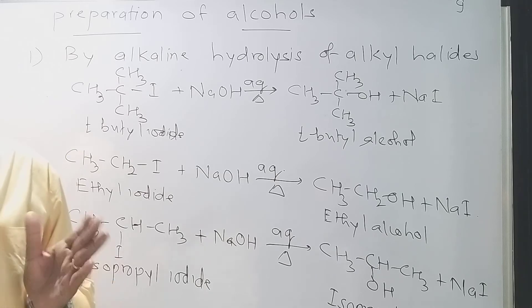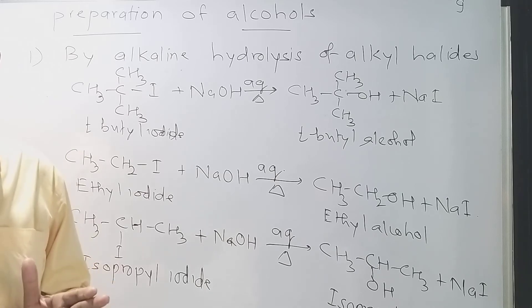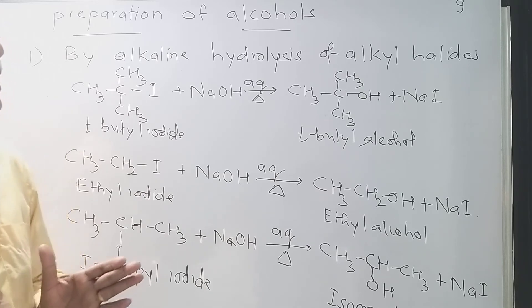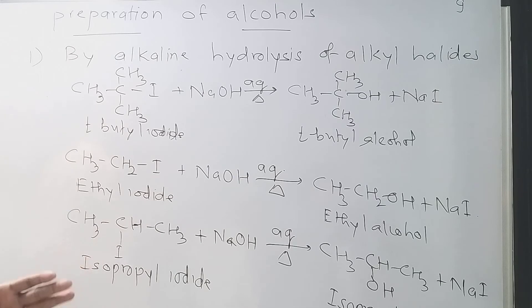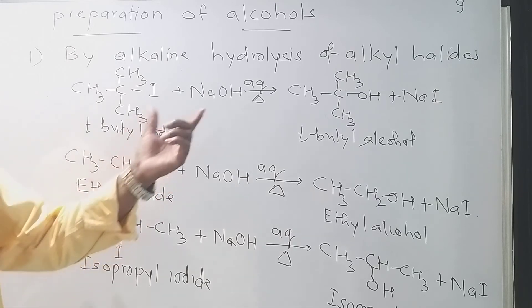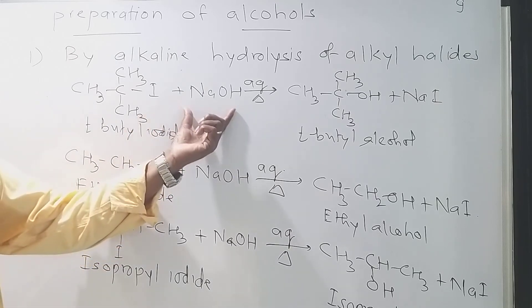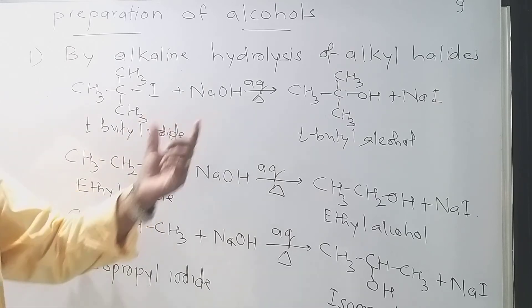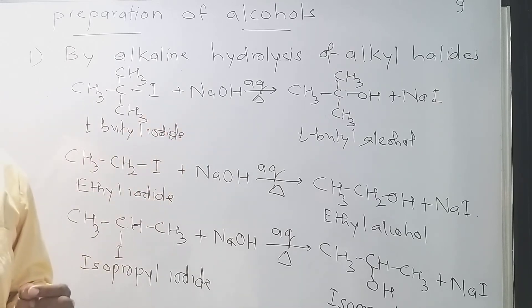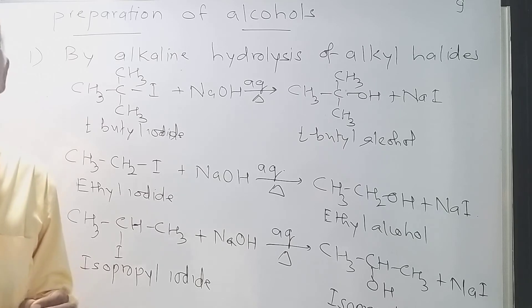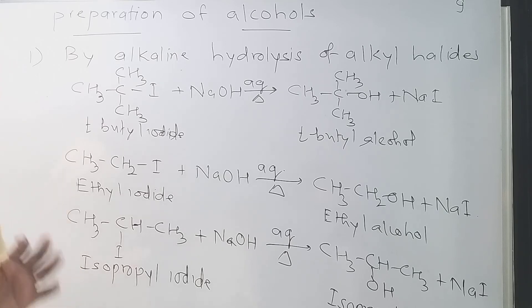In the halogen derivatives topic, we also added a variation of this reaction where instead of using aqueous NaOH or KOH as the alkali, we use moist silver oxide.